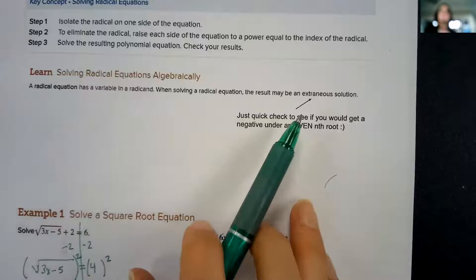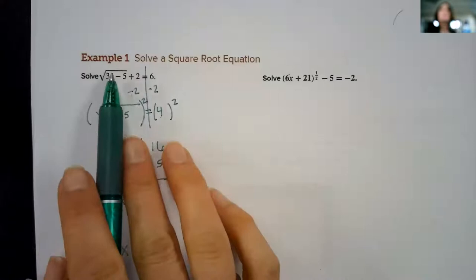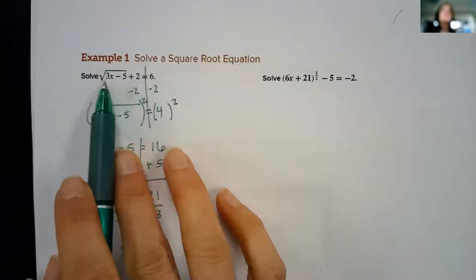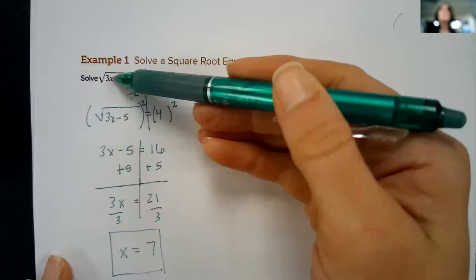Now you do need to check, and it tells you right here: radical equation has a variable in a radical, therefore you have to check and make sure you don't get an extraneous solution. But all you really need to check is to see if you get a negative underneath an even nth root. So check it's an even root, it's a square root. Take that 7 in your head, just real quick. If I plug this 7 in right there, 3 times 7 is 21, 21 minus 5 will not give me a negative number, so this one will be just fine.